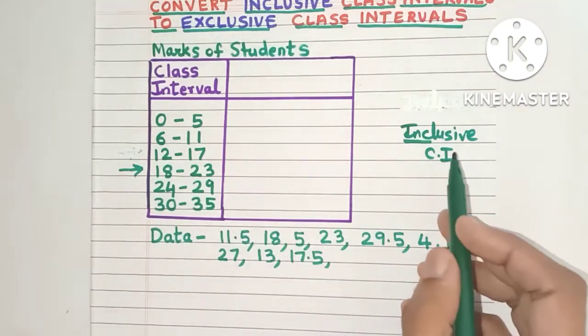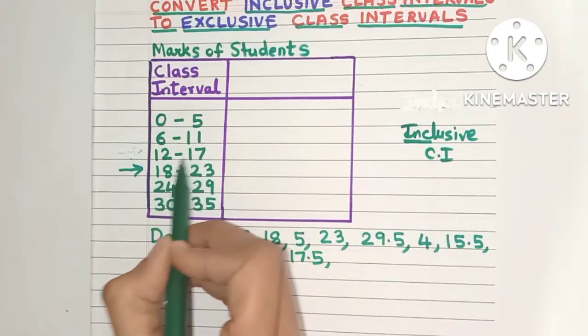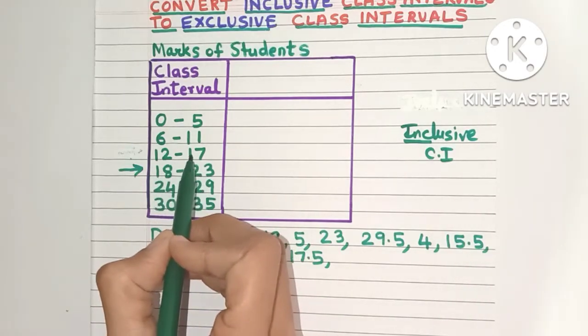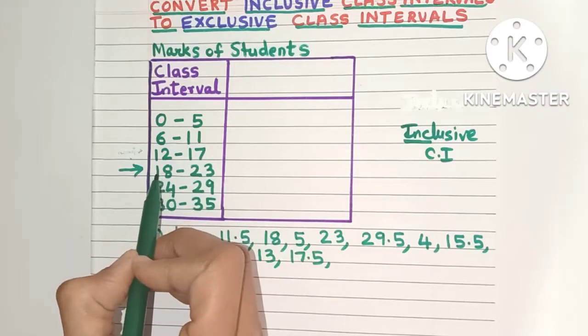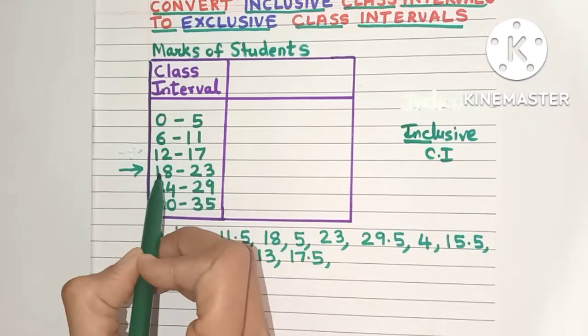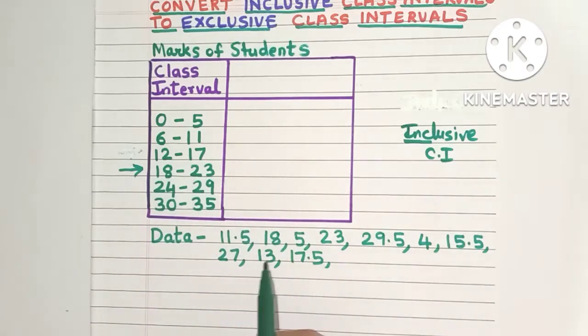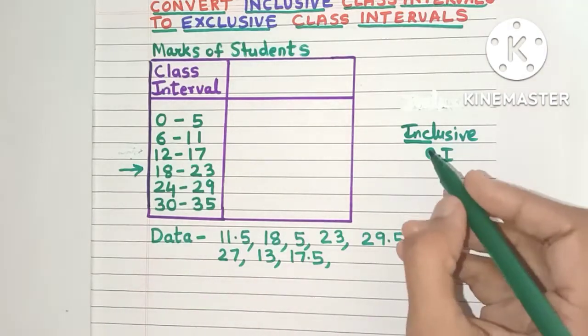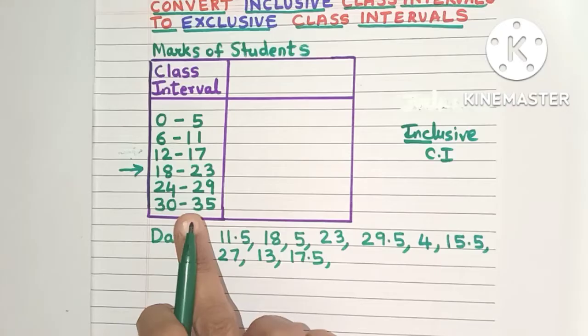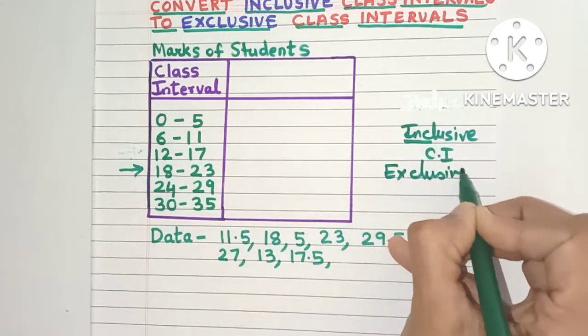Now this is a big problem with inclusive class intervals. That's because there is a gap between two class intervals. See this class interval is ending at 17 and the next class interval is not starting with 17. It's starting with 18. So because of this gap there is a lot of data which is not getting represented. This problem can be easily overcome by converting this inclusive class interval into exclusive class interval.